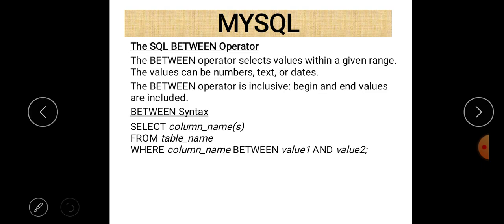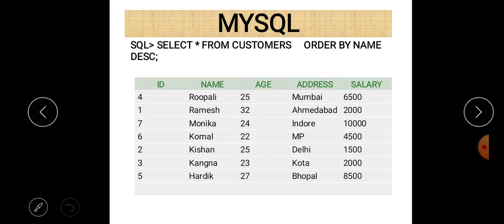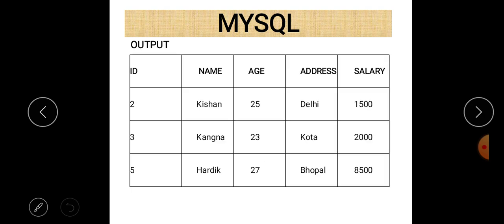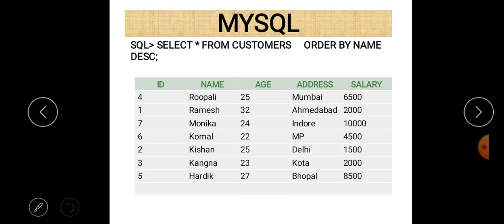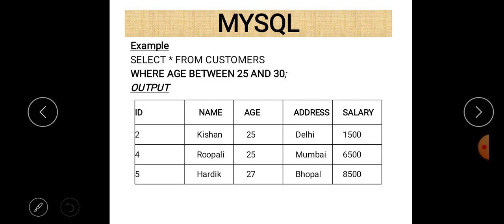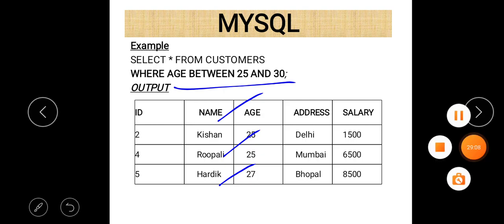Looking at the original customer table, the output shows three rows where age lies between 25 and 30 — Rupali, Christian, and Hardik are the three records selected. This demonstrates the result of the BETWEEN operator, confirming that boundary values are included in the result.